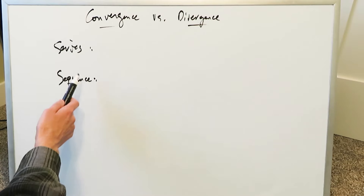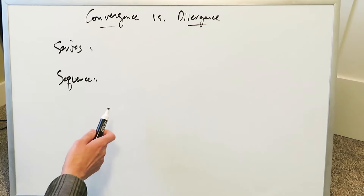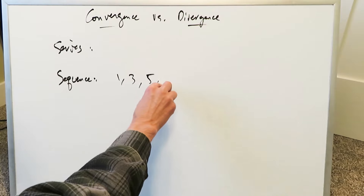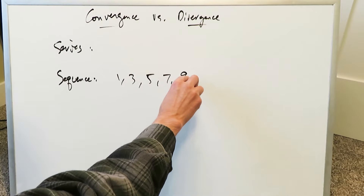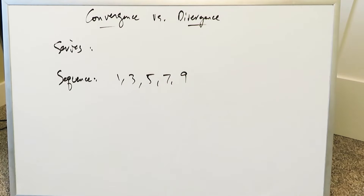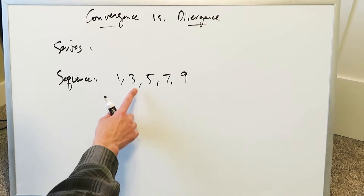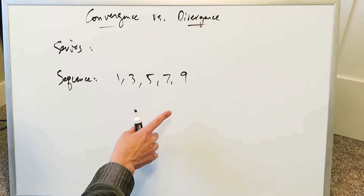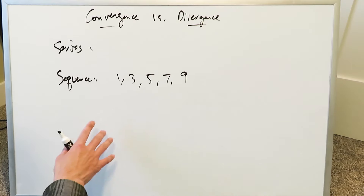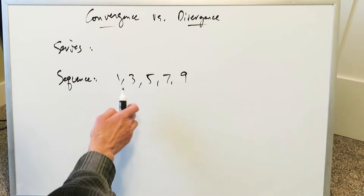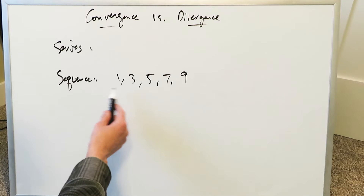Quickly, the difference between a sequence and a series. Look at what I'm doing here: 1, 3, 5, 7, 9. That right there is a sequence of terms because you have a defined order of quantities, each differing from the other by means of a fixed pattern. That's a sequence.